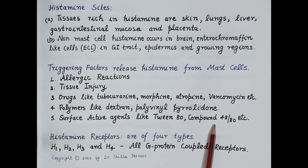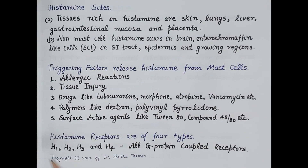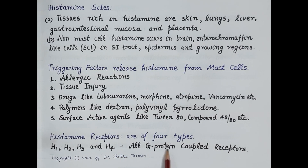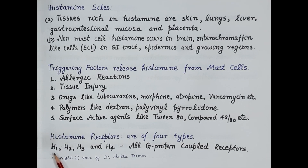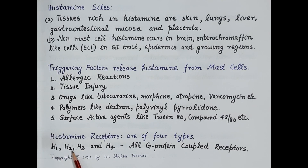There are four main types of histamine receptors: H1, H2, H3, and H4. All four receptors are G protein-coupled receptors. In this video, we are going to concentrate on H1 and H2 receptors, as these receptors are the main targets of clinically used drugs.